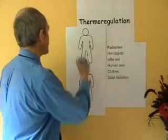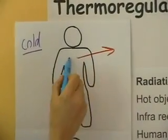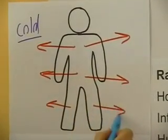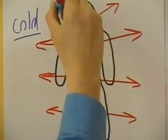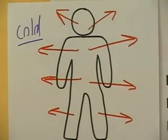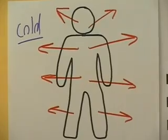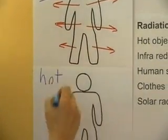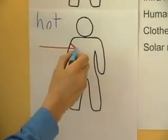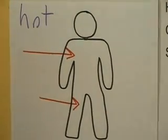So if we're in a cold environment, heat is going to be lost by radiation from the body. It's actually infrared radiation carrying heat away from the body at the speed of light. Now, in a hot environment, when there are hot objects in the environment, or indeed in a very sunny environment, then the body is going to absorb heat either from radiation from the sun or from radiation from hot objects in the environment.